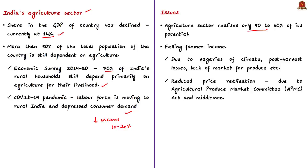Other issues in the agriculture sector include falling farmer income due to challenges of climate change, post-harvest losses, lack of market for produce, and exploitation by middlemen. One of the main reasons is reduced price realization, which is affected by the Agriculture Produce Market Committee Act and by middleman exploitation. Middlemen buy produce at lesser rates from farmers and then sell to consumers with significant profit margins.